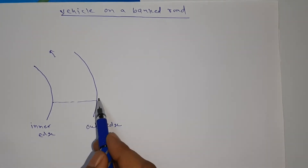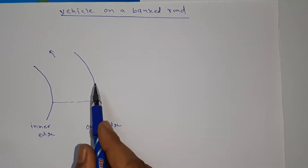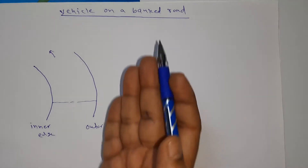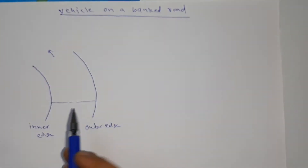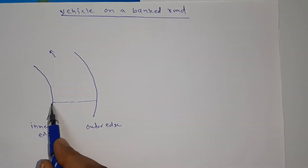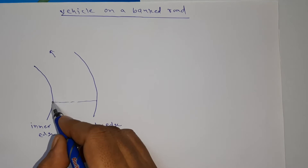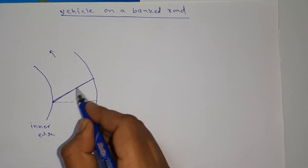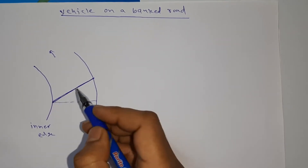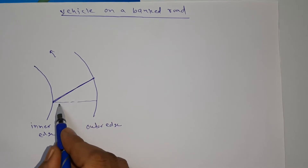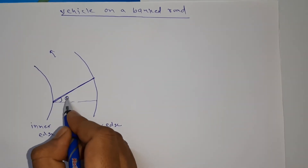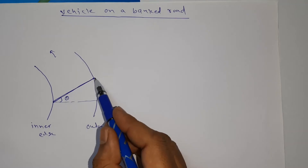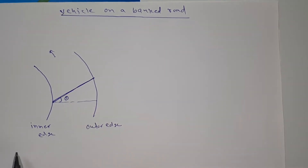In a banked road, the outer edge is slightly raised above the inner edge — that is, the outer edge is elevated with respect to the inner edge. So we can say this is the actual road; this is the length of the road. The angle which is formed, we call the angle of banking — that is, the angle made by the outer edge with respect to the inner edge.